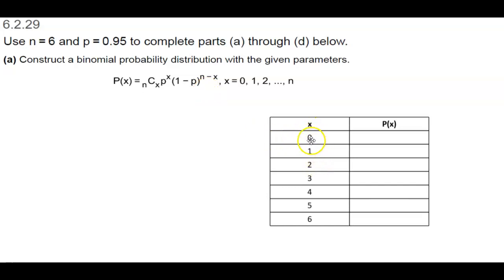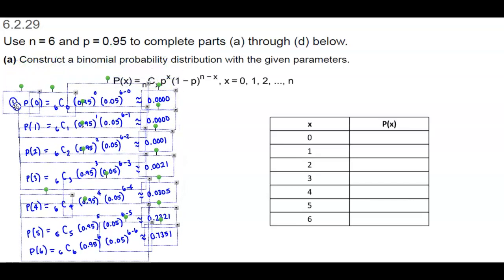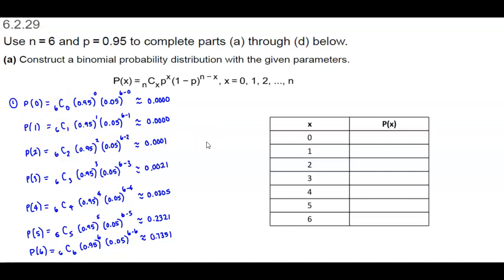We're given the values of x, so we know that x goes from 0 to 6. We want to find the probability of each particular one. We can find the probability of x equals 0 by plugging into the formula where n is 6. We know that x is 0, 1, 2, 3, 4, 5, and 6. The exponents change as we plug in our formula to get each result. We can do this separately or use the TI-84.